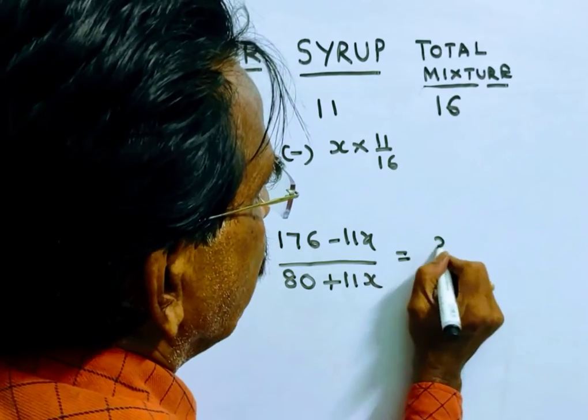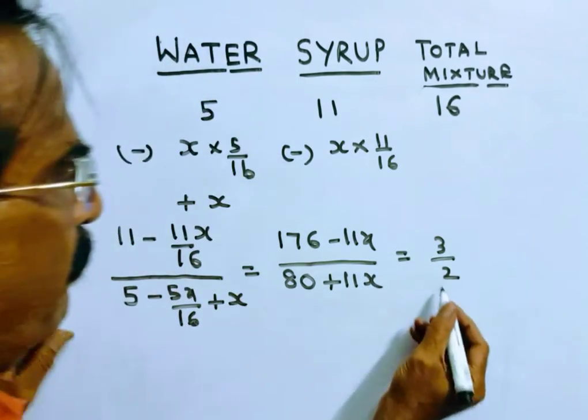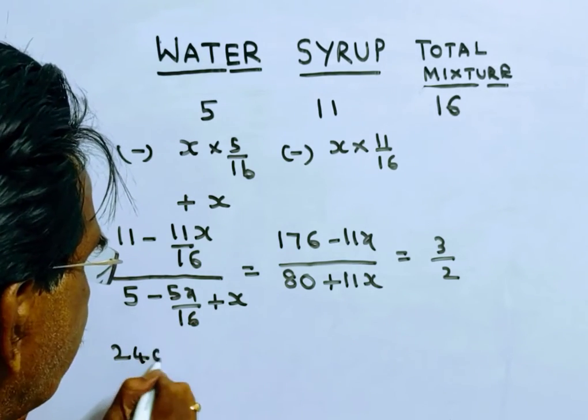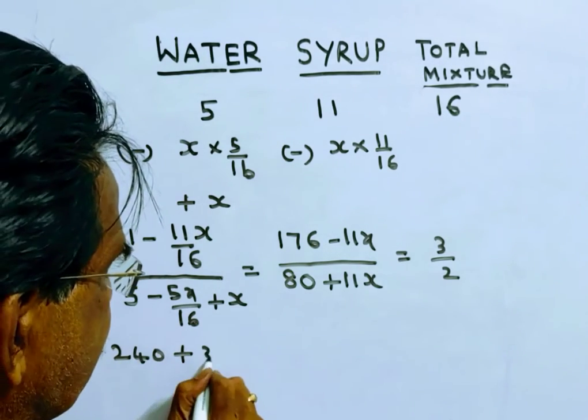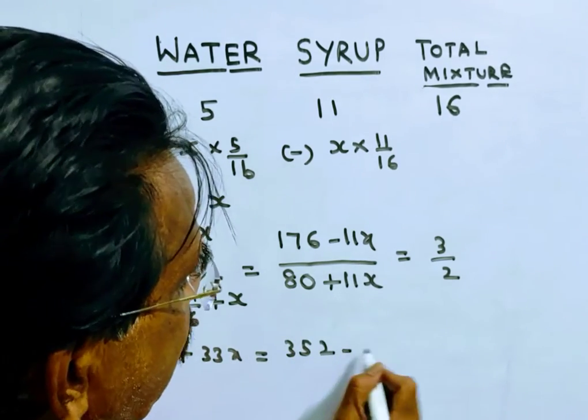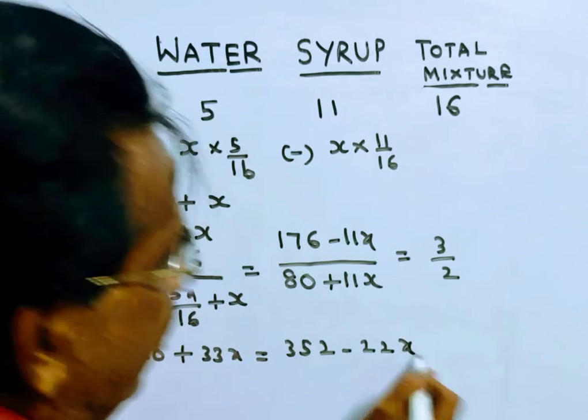This is equal to 3 by 2. 3 times 80 is 240 plus 33x is equal to 352 minus 22x.